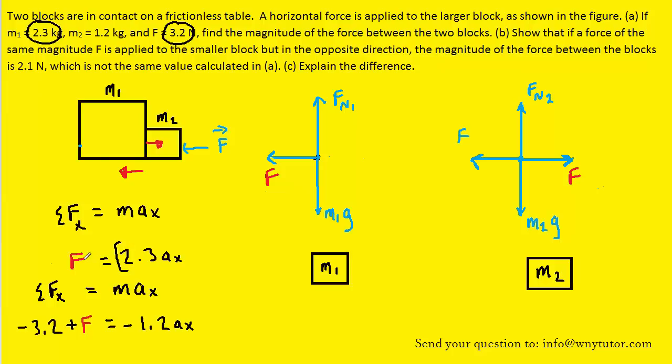We're going to go ahead and make a substitution. We know that the unknown force F here is 2.3 Ax. We can substitute that in right there. When we solve for Ax, we get the same value that we obtained previously, which probably makes sense. So we have 0.914 meters per second squared, and then we can sub that back into here to get the unknown force.